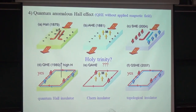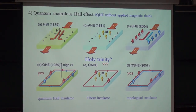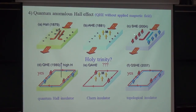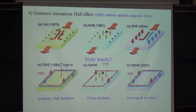Let me quickly review what we have covered. We have the Hall effect, then its quantized version, the quantum Hall effect. We also have the spin Hall effect and its quantized version, the quantum spin Hall effect. I also mentioned the Hall effect without a magnetic field — that's called the anomalous Hall effect. So naturally people ask: can we have its quantized version? That would be the quantized Hall effect without a magnetic field, also called the quantum anomalous Hall effect or spontaneous Hall effect.